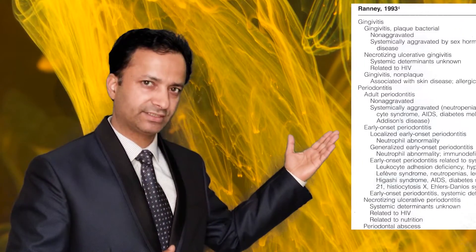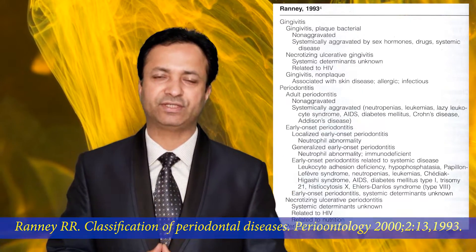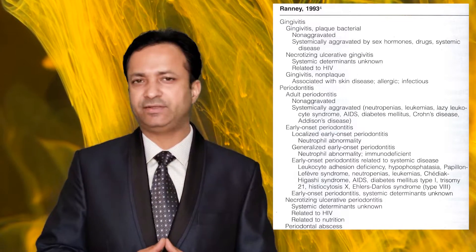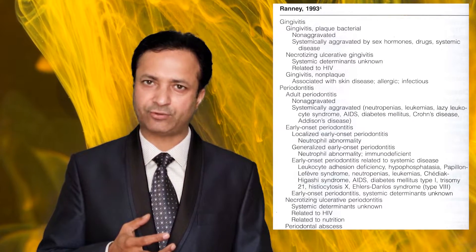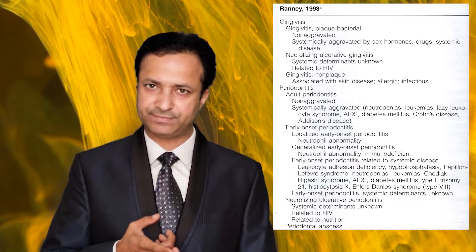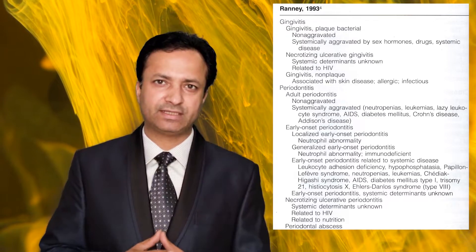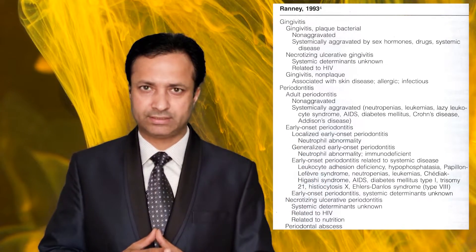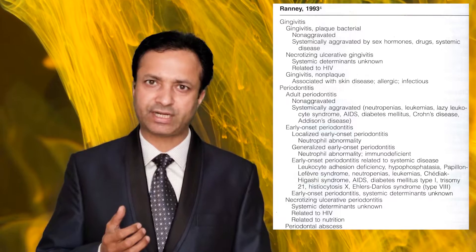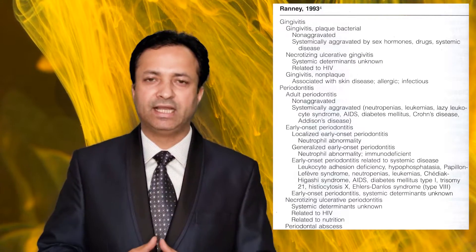In 1993, Raney gave an extensive classification system with four basic classes: gingivitis, periodontitis, necrotizing ulcerative periodontitis, and periodontal abscess. For the first time, an attempt was made to classify gingival diseases into plaque-induced gingivitis, non-plaque-induced gingivitis, and necrotizing ulcerative gingivitis. Periodontitis was subcategorized into adult periodontitis and early onset periodontitis, and many disorders with periodontitis as a manifestation were included.